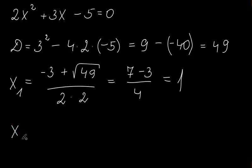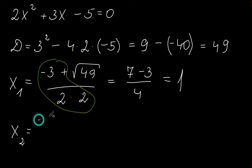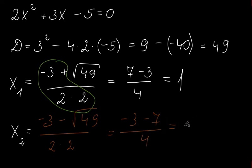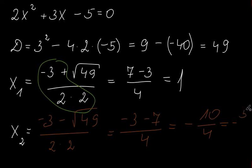Now x₂ is our second solution. This part will be the same but this time there will be a negative sign before our discriminant. So it will be minus 3 minus the square root of our discriminant, divided by 2 times 2. This gives us minus 3 minus 7 divided by 4, which gives us minus 10 over 4, and that is minus 5 over 2.